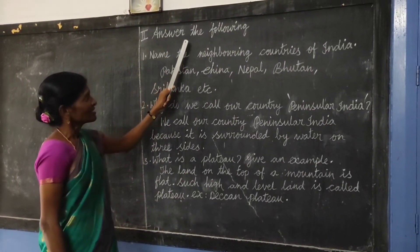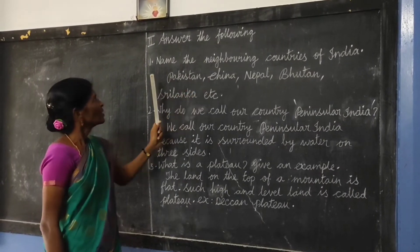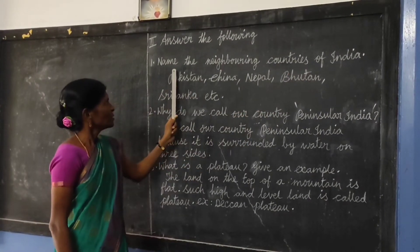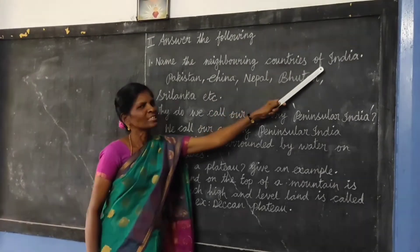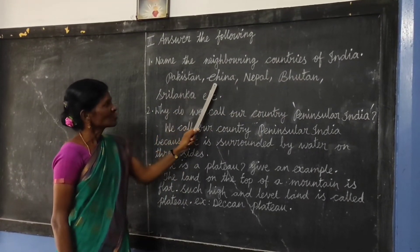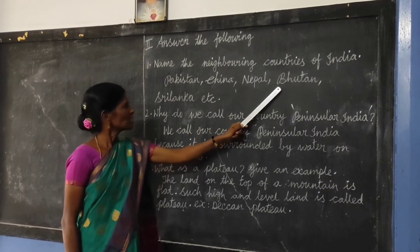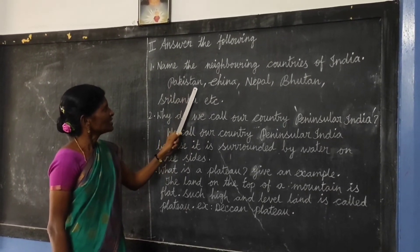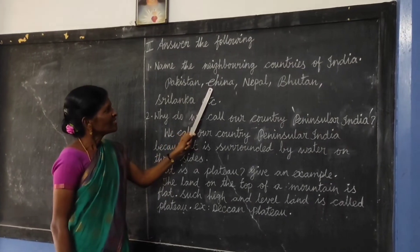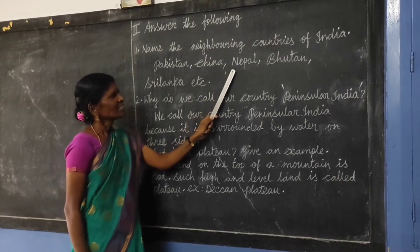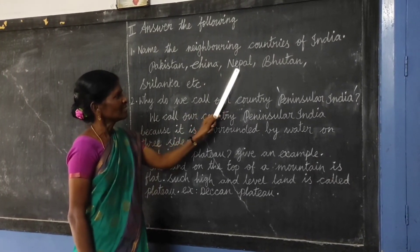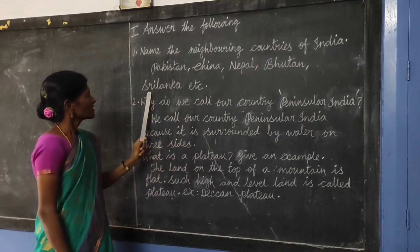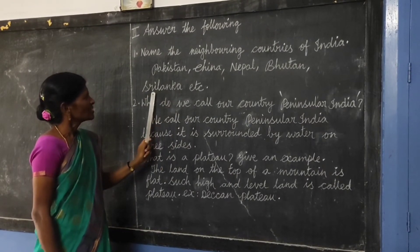Answer the following. Question 1: Name the neighboring countries of India. Answer: Pakistan, China, Nepal, Bhutan, Sri Lanka, etc. Question 2: Why do we call our country Peninsular India? Answer: We call our country Peninsular India because it is surrounded by water on three sides.